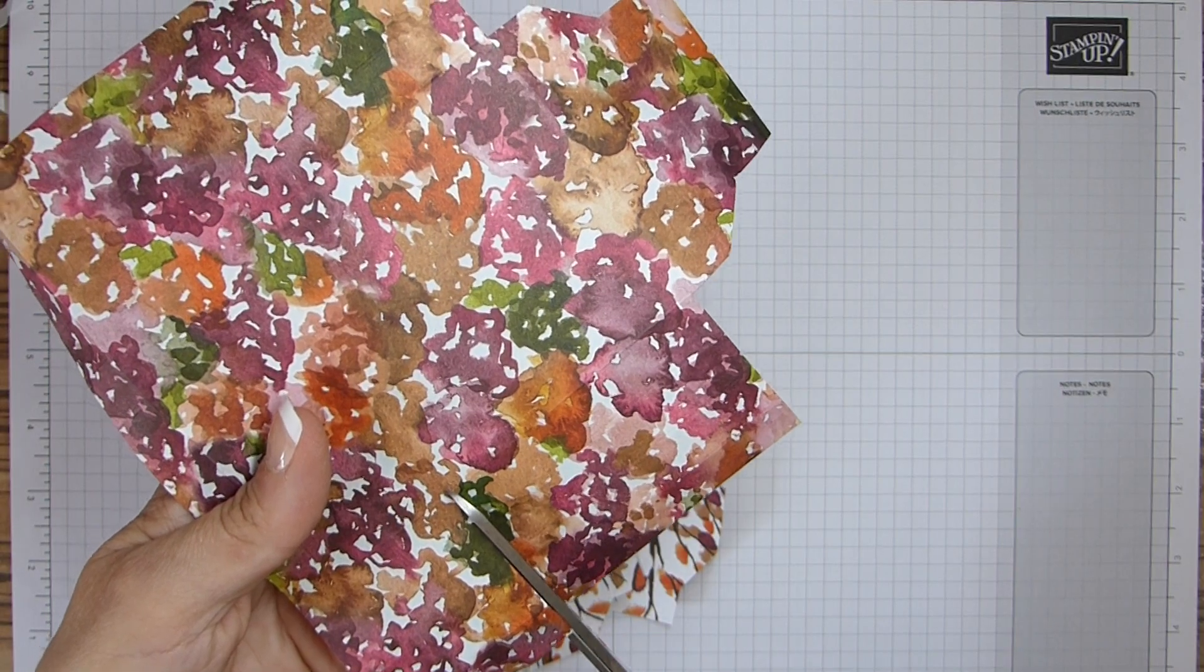So again, I'm going to repeat that on this side. So down two diagonally across one and down and cut it away.